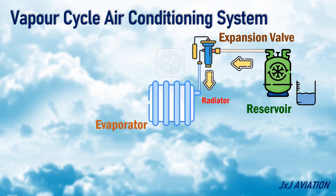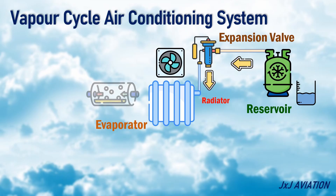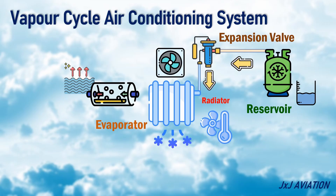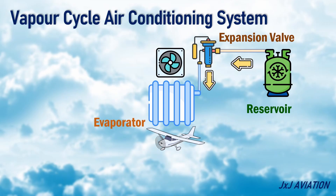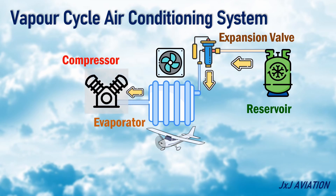A fan blows cabin air across the evaporator. The refrigerant absorbs the heat and changes from liquid to vapor state, and the cabin air temperature reduces significantly in this process — this is the cold-conditioned air supplied in the aircraft. The gaseous refrigerant is then collected by a compressor, where the pressure and temperature of the refrigerant increase.